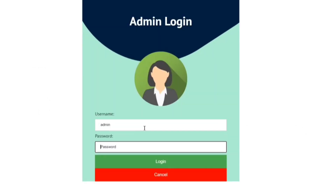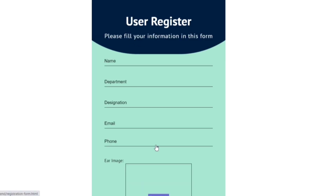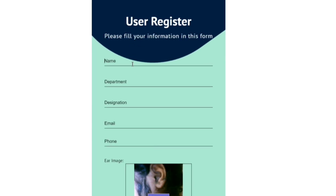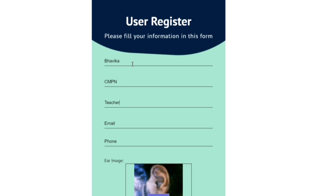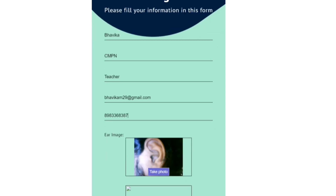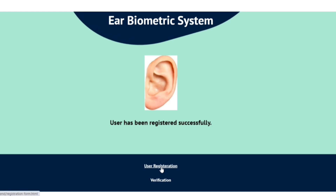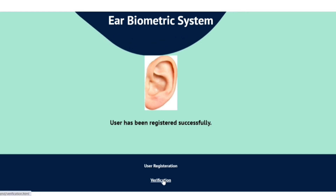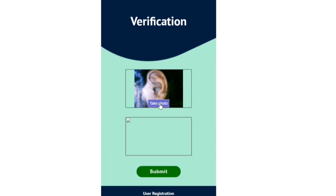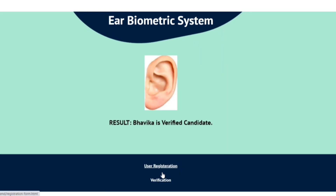Coming to the working demonstration, this is the admin login page of our system. Once the admin is logged in, it goes to the home page which has two buttons: user registration and validation. In user registration, all the details have to be filled and the image is captured. As soon as we submit, the data is saved into the database and it displays 'user is registered successfully.' For verification, the image is captured and submitted, and the system checks the database and displays the result as 'Bhavika is a verified candidate.'